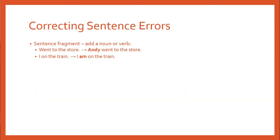There are a couple of different ways to correct sentence errors. If you have a sentence fragment, one of the easiest things to do is to either add a noun as the subject or add a verb. In the example 'went to the store,' all we need to do is add a subject: 'Andy went to the store' — now the sentence is correct. Similarly, 'I on the train' is missing a verb, so if we add one and say 'I am on the train,' the sentence is fixed.